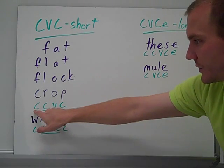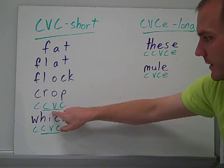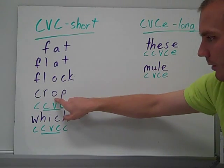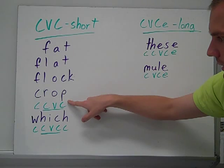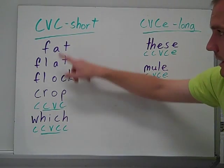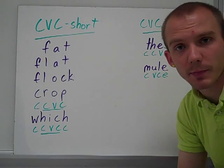Crop. I labeled this one CCVC. I labeled every letter. Either a consonant, like C and R, a vowel, like O, or a consonant, like P. And you notice where the vowel is. It's CVC, just like our pattern, and crop, short o.